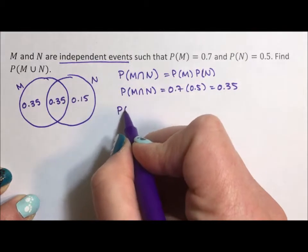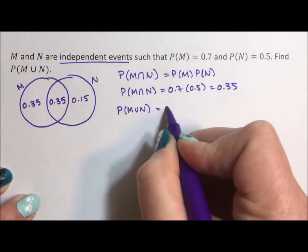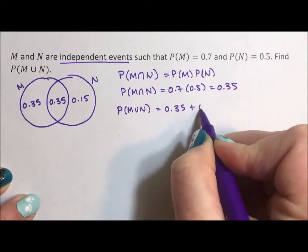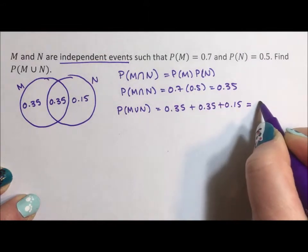And so the probability of the union of the two is just adding all of these together, 0.35 plus 0.35 plus 0.15, which ends up being 0.85.